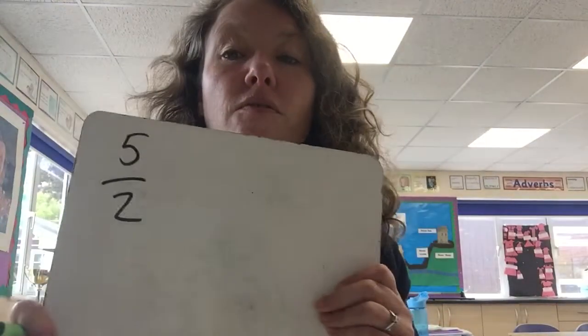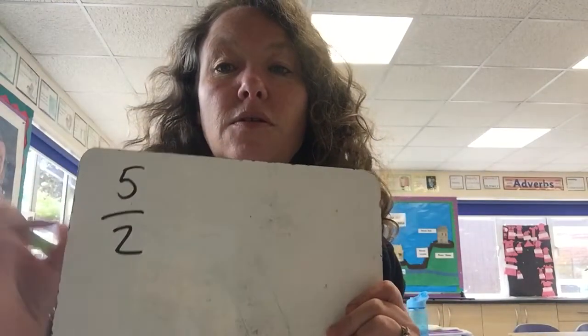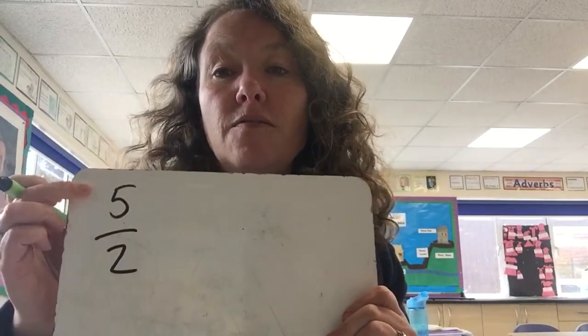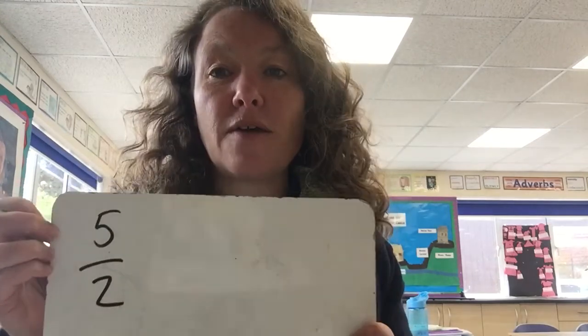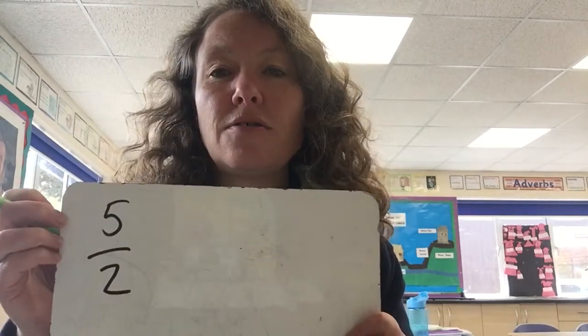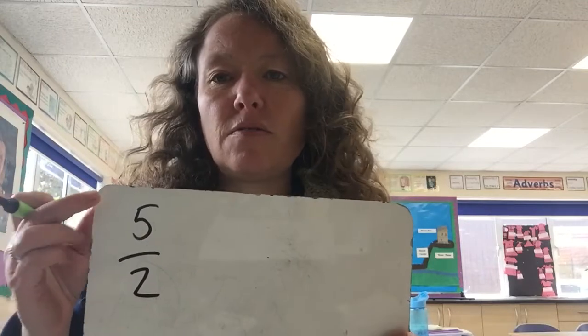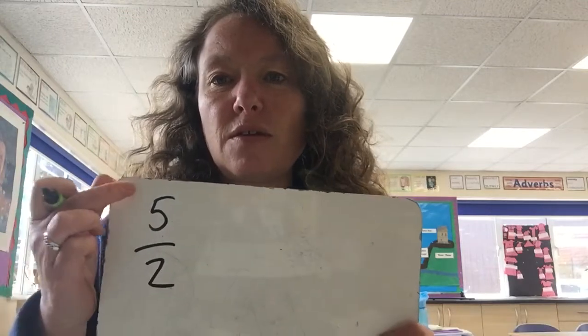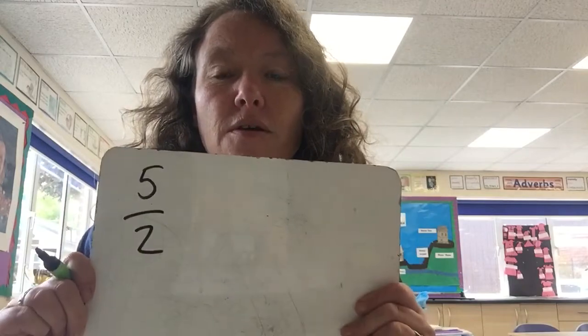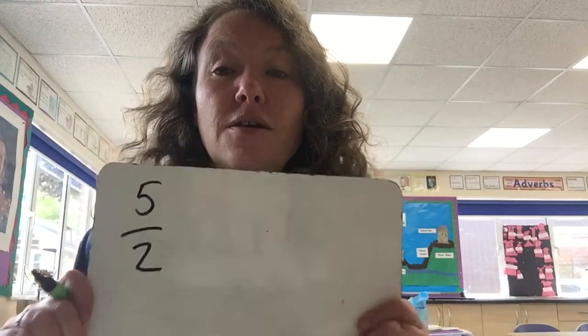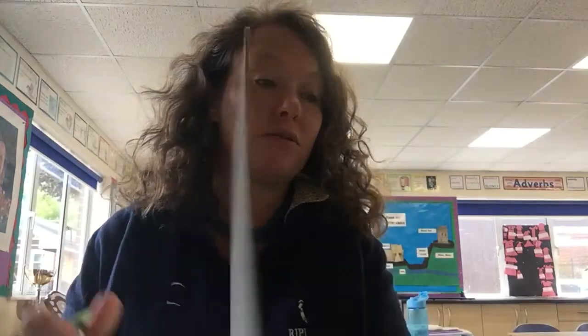So, for example, we could say five halves. Five is bigger than two, so this is called an improper fraction — or sometimes it's called top-heavy. I think it's easier to remember top-heavy because you can tell it's heavier, bigger at the top than it is at the bottom. So we'll be looking at these improper or top-heavy fractions.